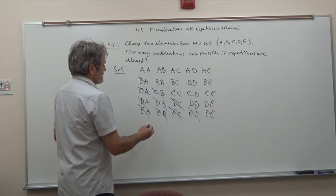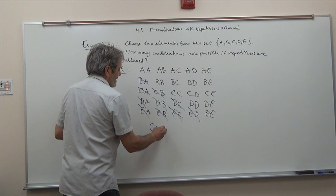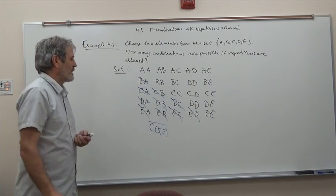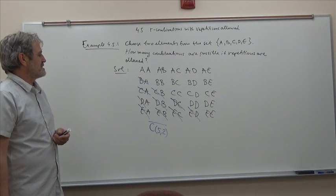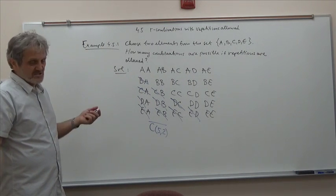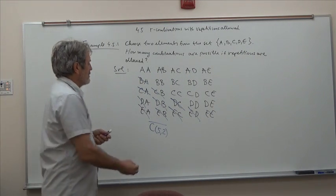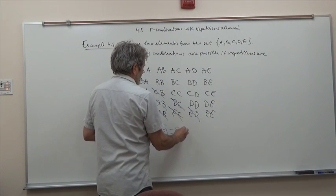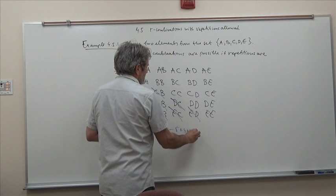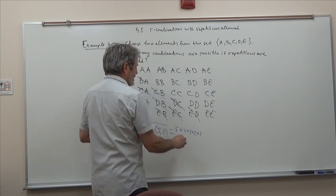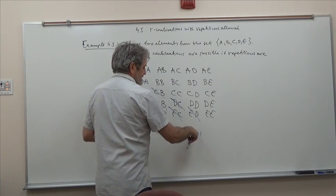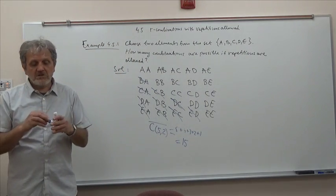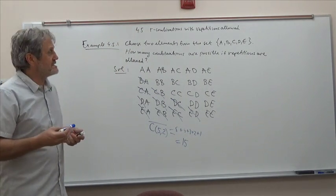So all together, now I can do the count. The writing here would be C(5,2) with a bar above - that means I'm allowing repetition, that's a standard symbol. I just add them: 5 + 4 + 3 + 2 + 1 = 15.